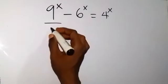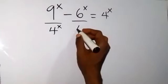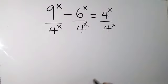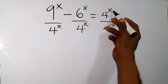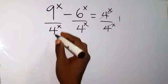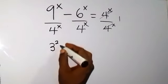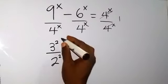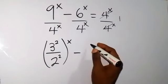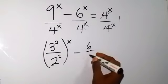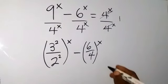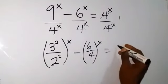So let's divide both sides by 4 raised to power x. These cancel each other and what we have left is 1 on this side. Then we can rewrite this side as 3 squared divided by 2 squared, all raised to power x, and we can write 6 over 4 and bring out the power since they have the same power, from the law of indices, and we have equals to 1.